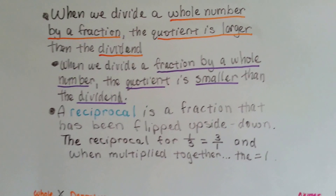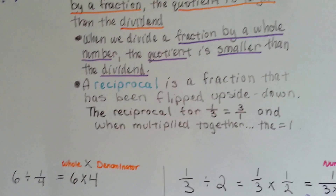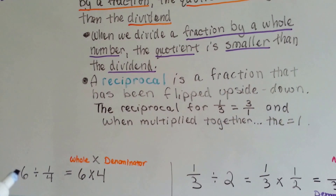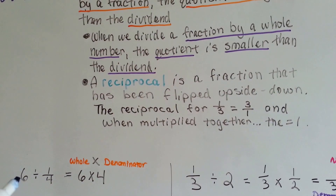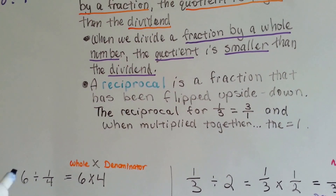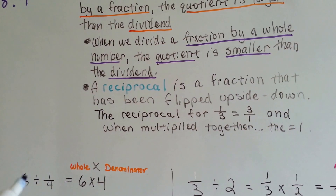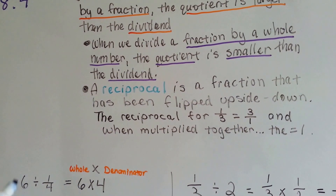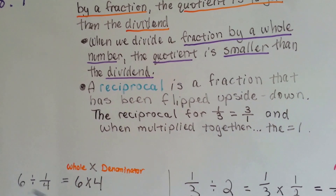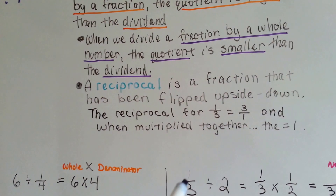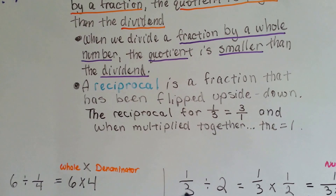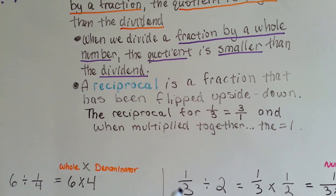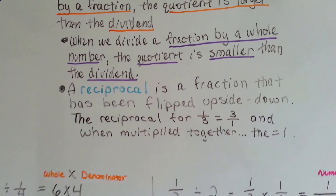I want you to picture: when the whole number is first, then the quotient — the answer — is going to be bigger than this. When the fraction is first, the quotient, the answer is going to be smaller than this.